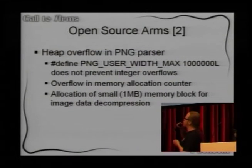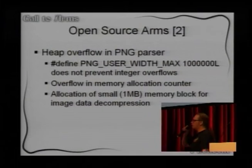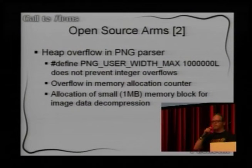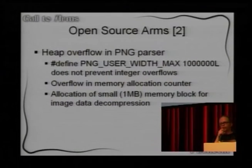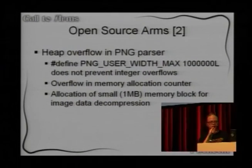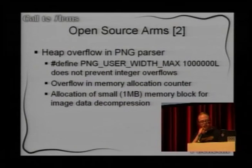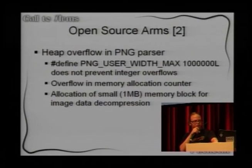Then they allocate that much memory and write stuff in there. So this is why they limit it arbitrarily. Of course, this means you have to read four more lines of C code where he's multiplying it by 20, and then everything is broken again.